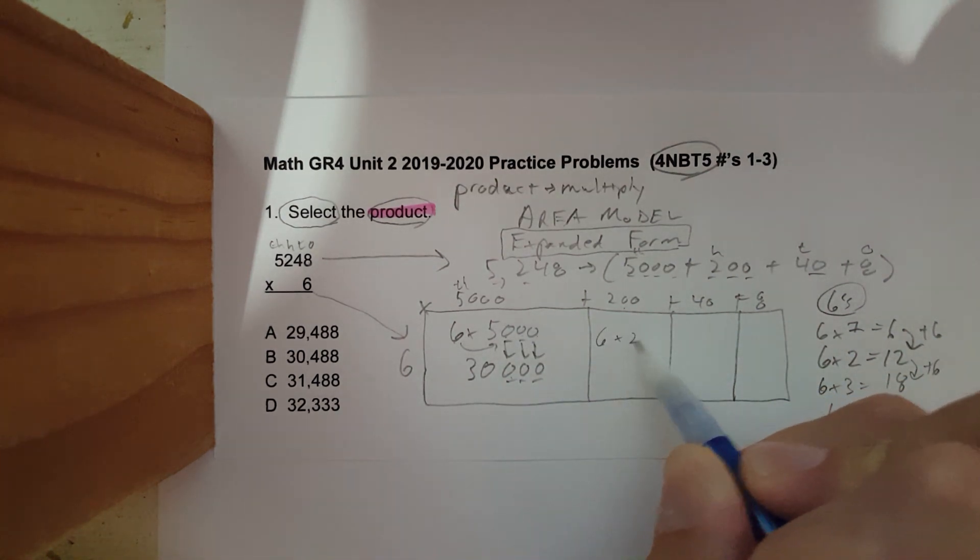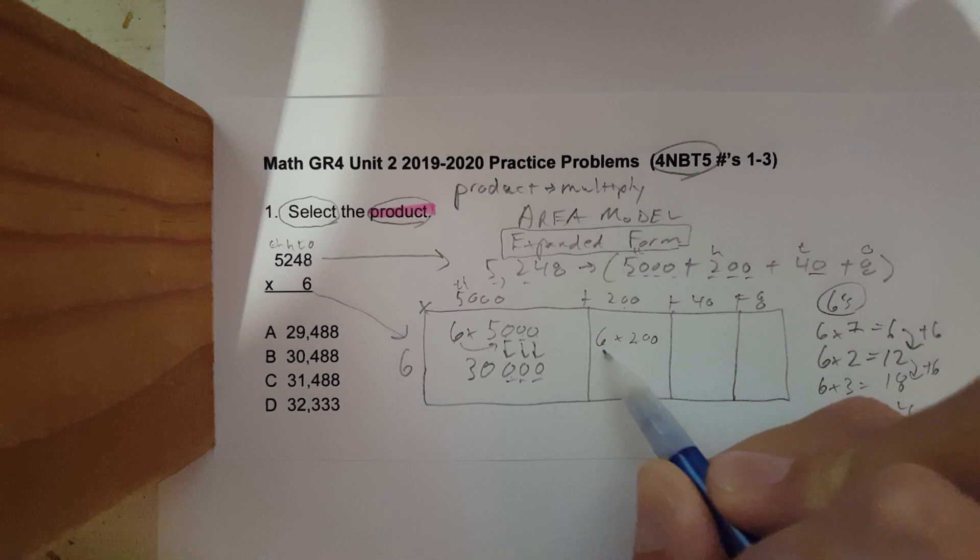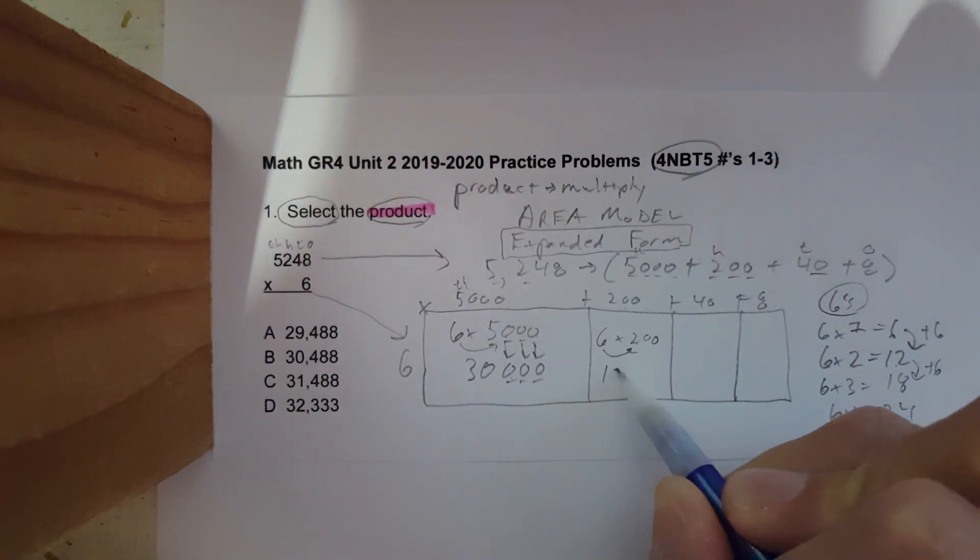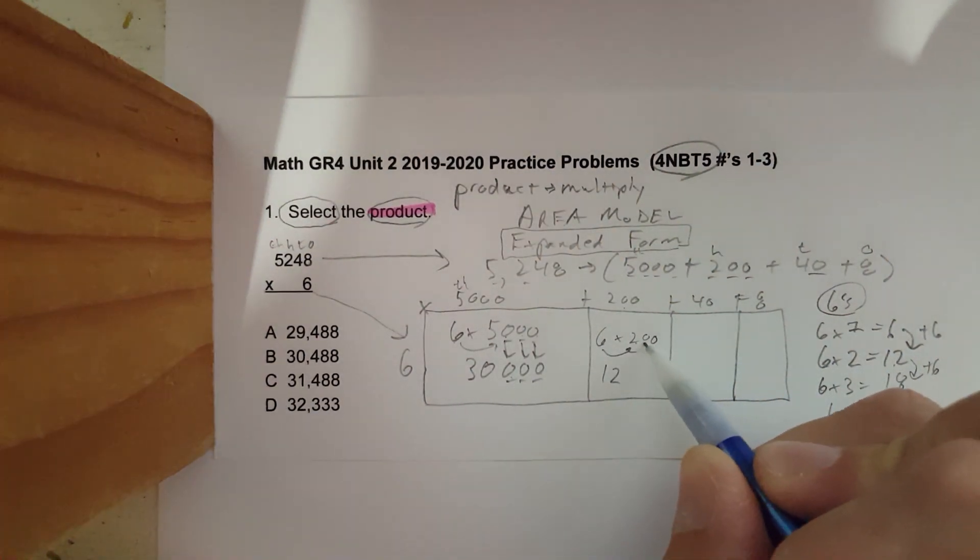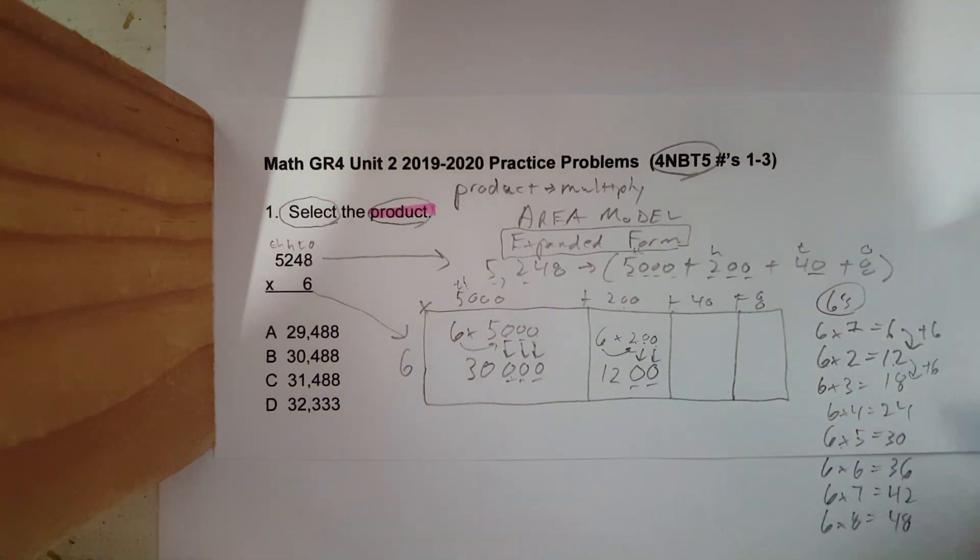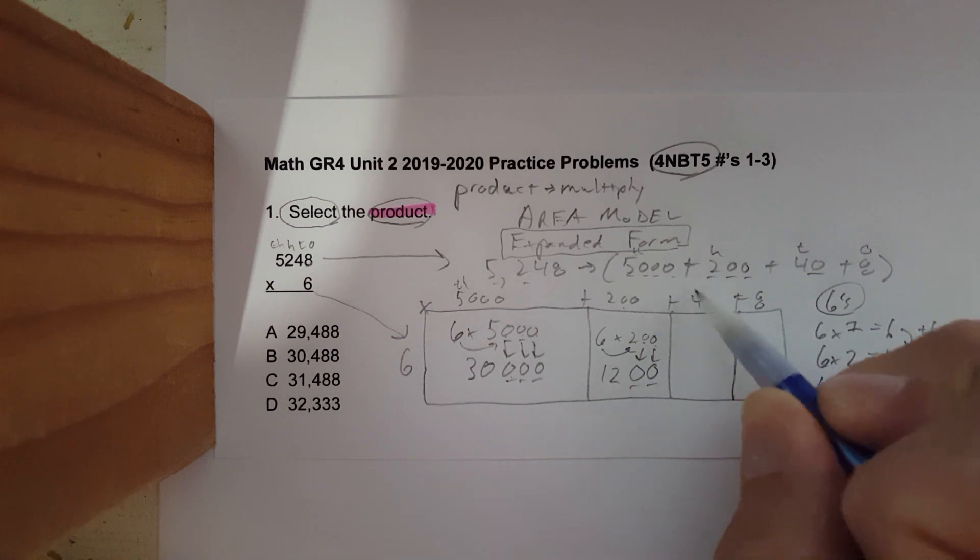I'm going to do that same process for the rest. Six times two - six times two is 12. How many zeros do I have? One, two. One, two. You can point arrows to show your work.